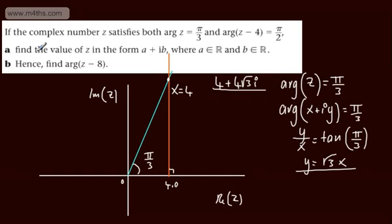It says hence find arg(z-8). This is going to be another half line. And if we take it from here, let's grab this point right here. An informal way of looking at this is that we're going to create an isosceles triangle. So this point right here is going to be 8, 0. Remember, when we're measuring these angles, they are measured anticlockwise parallel to the real axis. So we're after this angle right here.